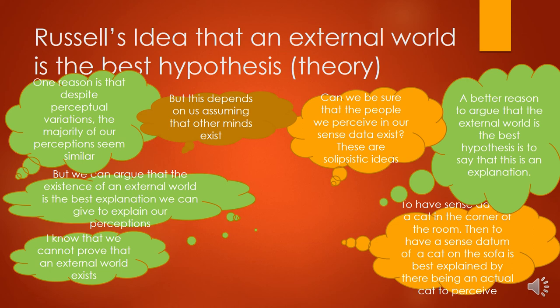One reason is that despite perceptual variations — colours, size and shape changing depending on where I'm standing — the majority of our perceptions seem similar and predictable. People might argue against this and point out that this depends on assuming there are other minds that exist and other people out there in the world. They also ask: can we be sure that the people we perceive in our sense data actually exist? Could it be that we are actually alone and are just minds? Russell says possibly, but a much better reason to explain our experiences is to simply say that an external world does exist, and this explains our everyday experiences.